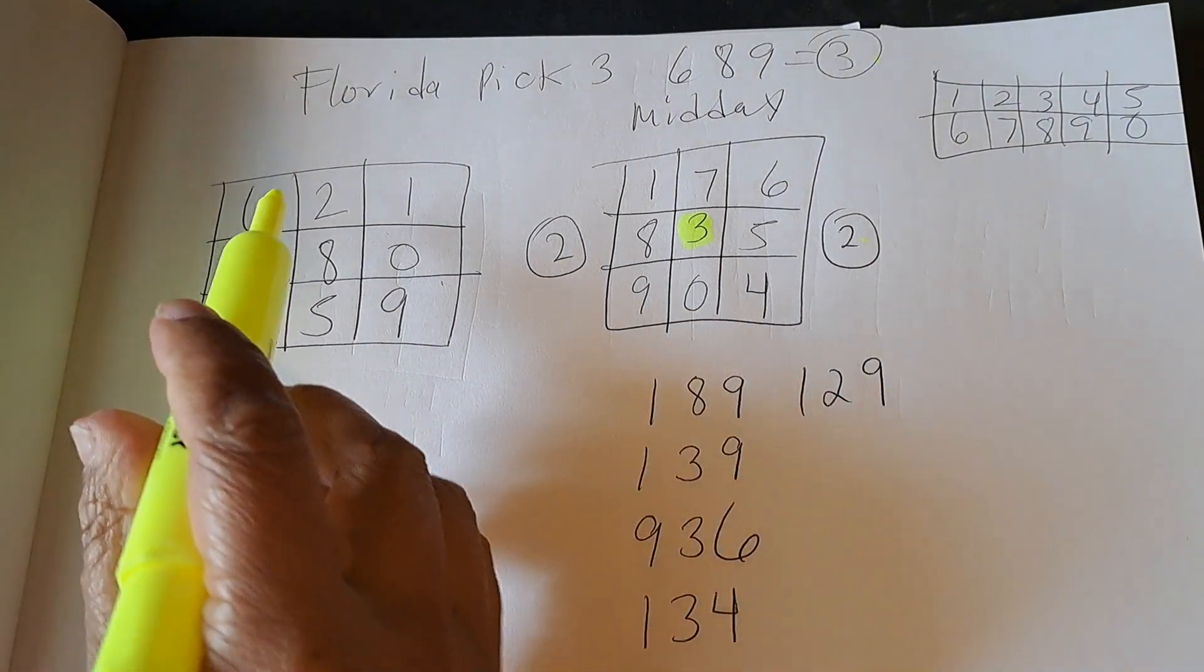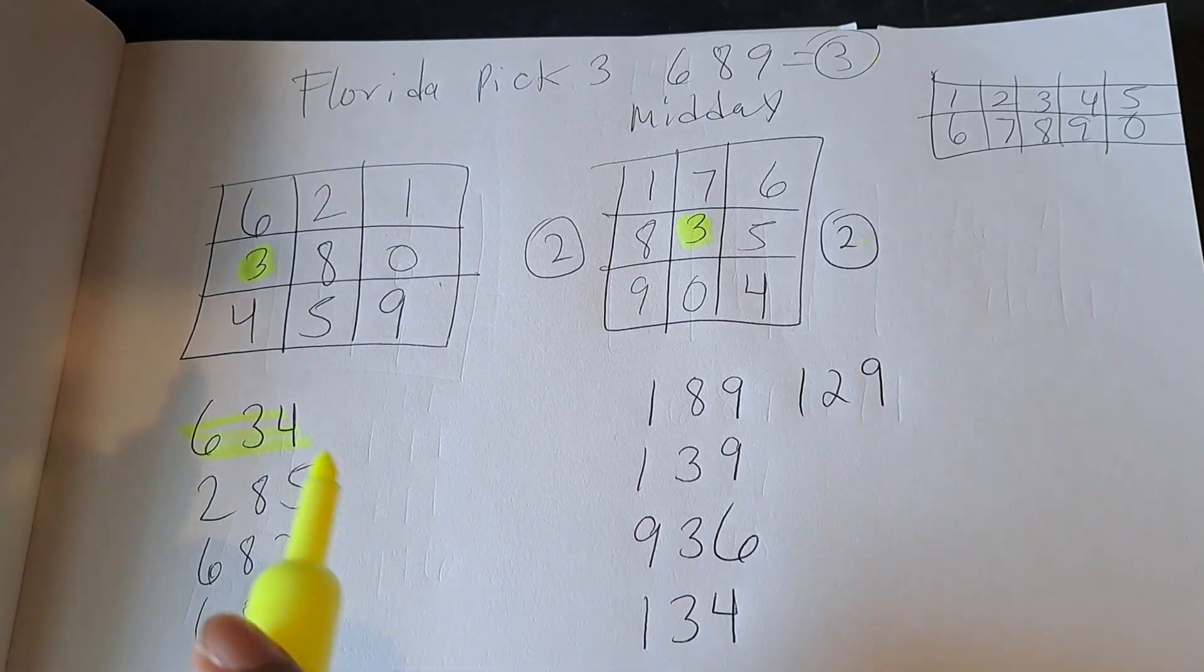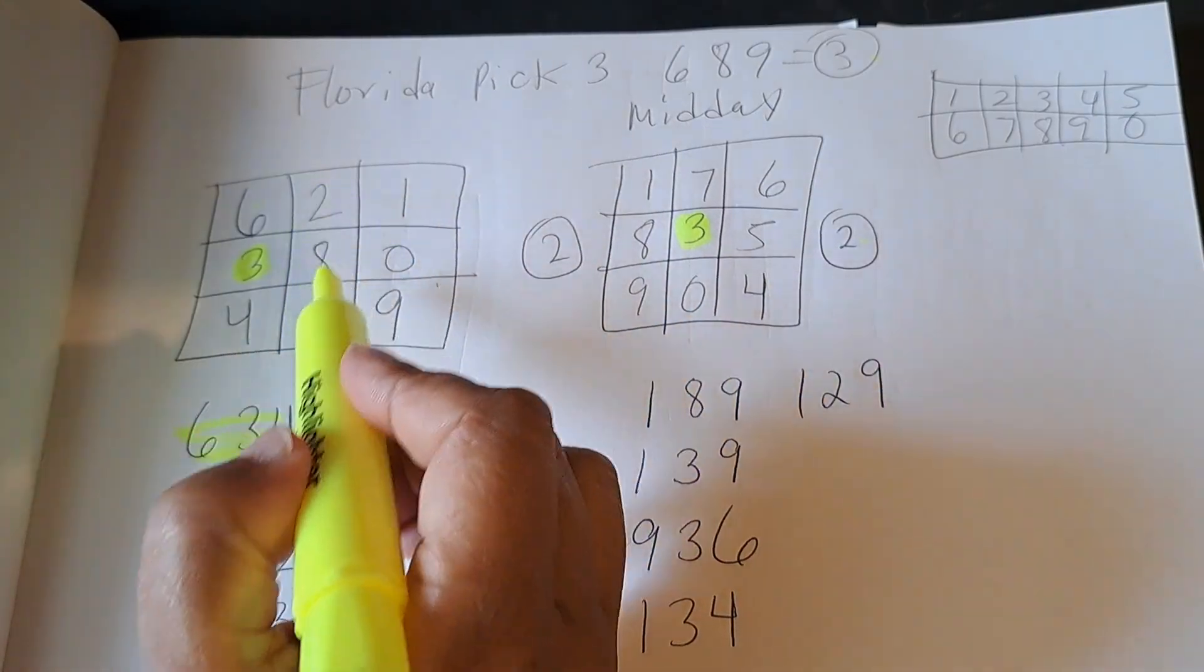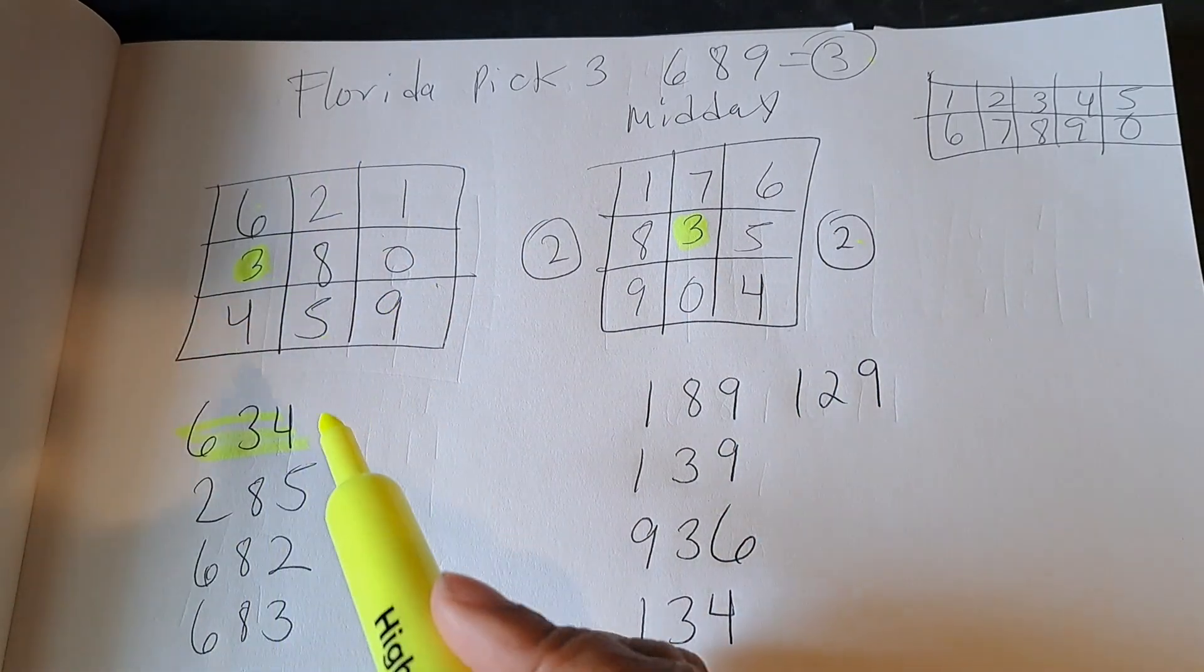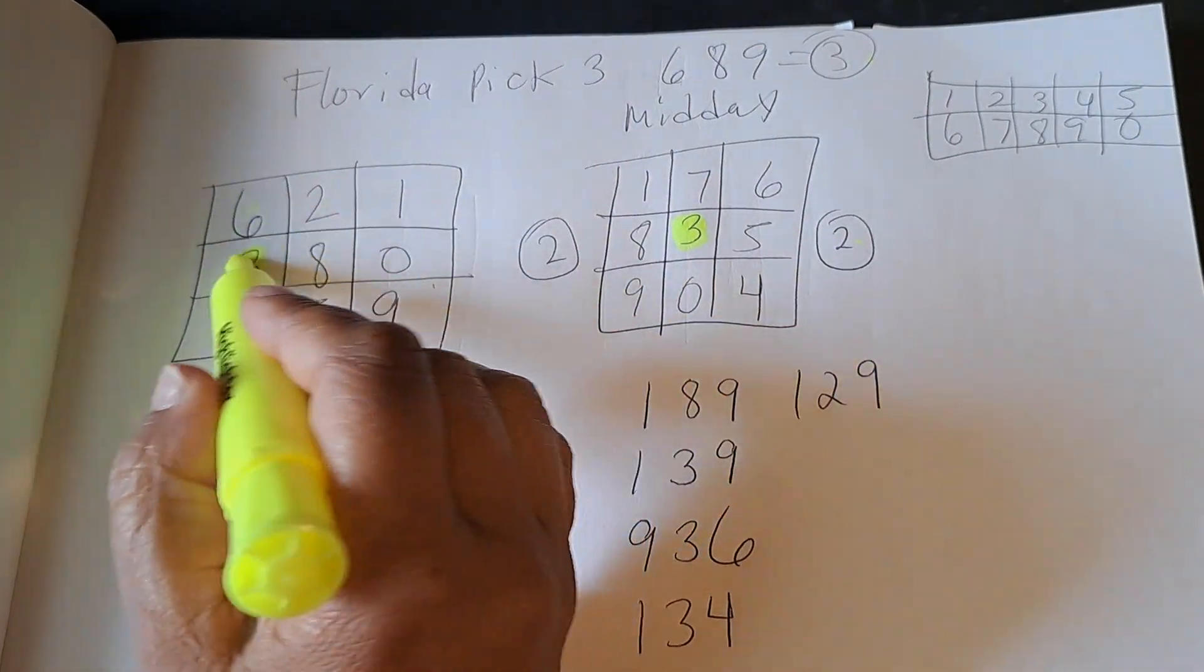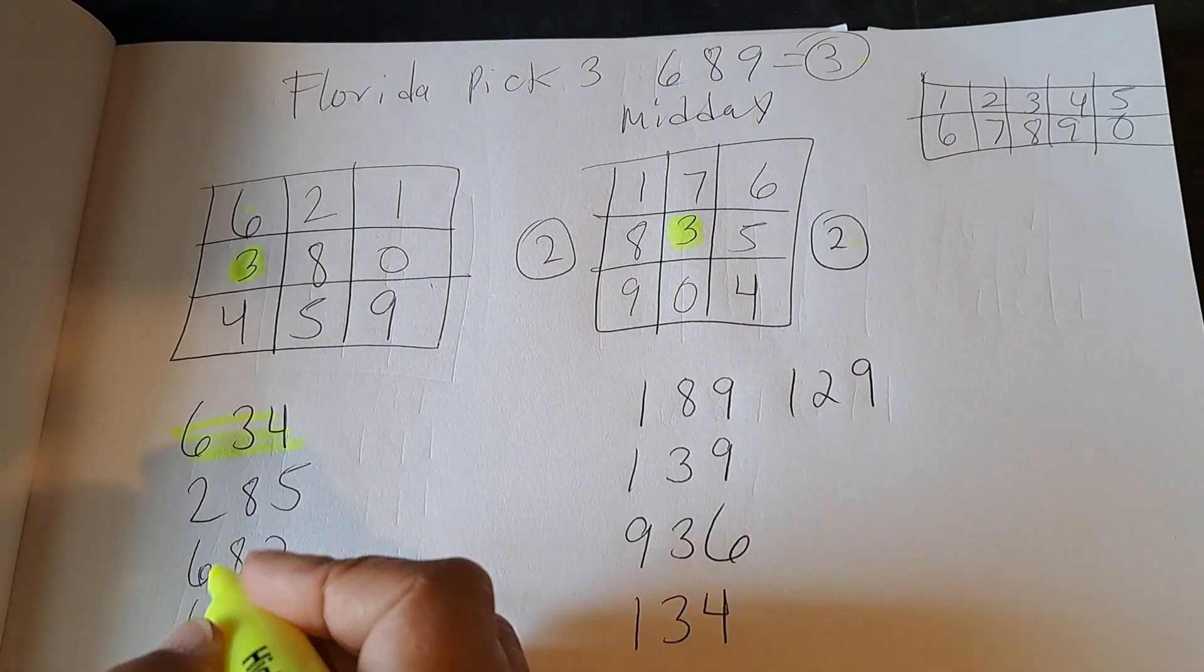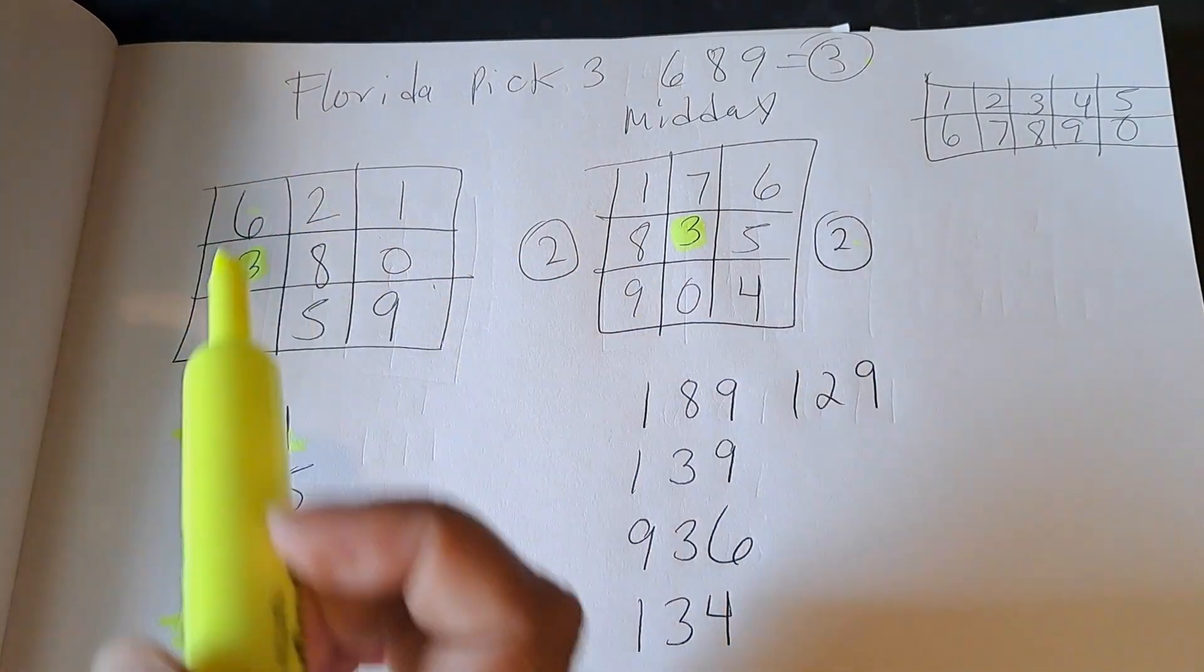So right here going straight, I really like that 634. I see 285 going vertically right here. 682 is over here. I see the 683. That's a good one. I actually like that 683 because it has the 68 pair.